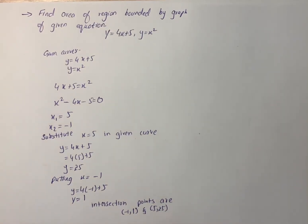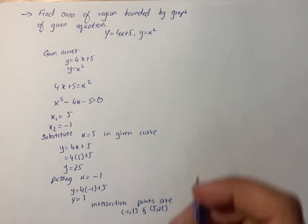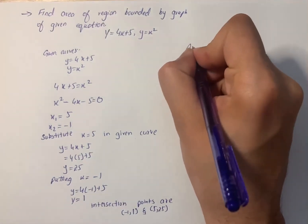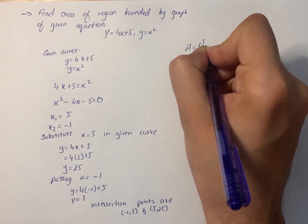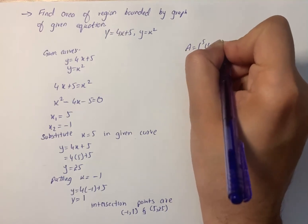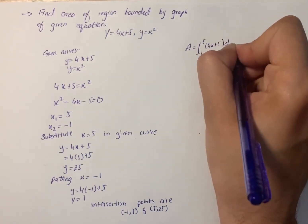Now the area of given curves can be calculated by subtracting the area under the curve from the area under the line, so we have A equals integral from -1 to 5 of (4x plus 5) dx minus integral of x squared dx.